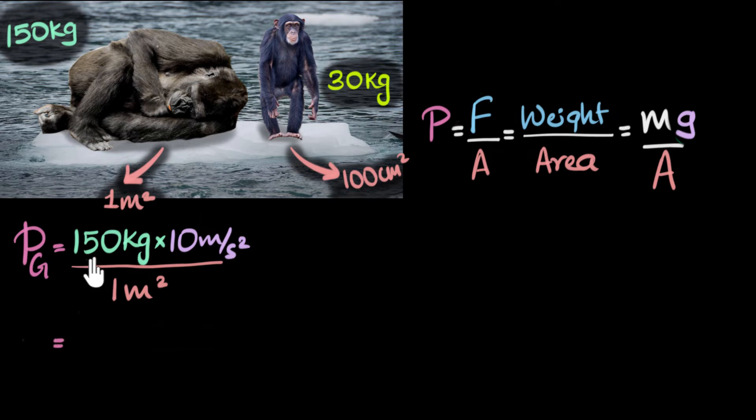That's going to be 1,500 kilogram meters per second squared, but kilogram meters per second squared is the unit of force, the unit of weight, and that is also called newtons, right? Divided by one, which is 1,500, and we have meter squared in the denominator. And so that's the pressure due to the gorilla. It's 1,500 newtons per meter squared, which we can also call Pascals. So 1,500 Pascal. That's the pressure due to gorilla.